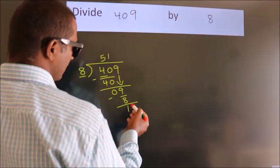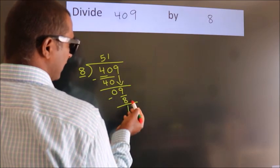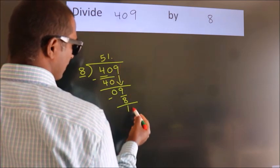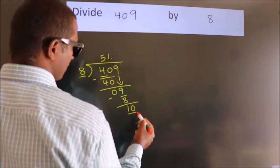After this, no more numbers to bring it down. So what we do is, we put dot take 0. So, 10.